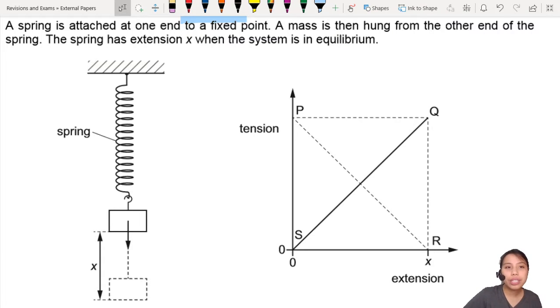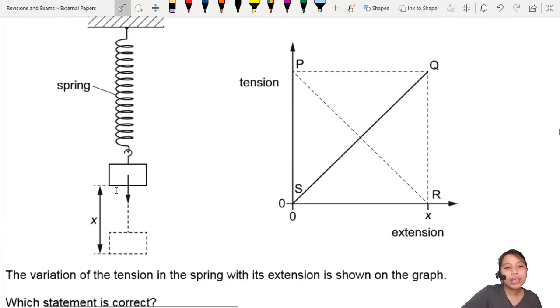Here's a very nice spring question. A spring is attached to a fixed point and something is hung there. The spring has extension x when the system is in equilibrium. So here is where the spring would chill at, because you know, equilibrium means upward force equals downward force.